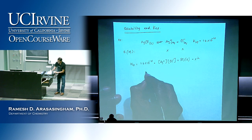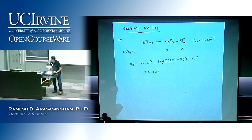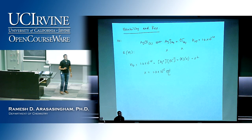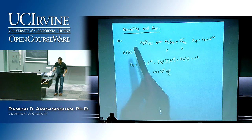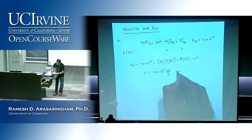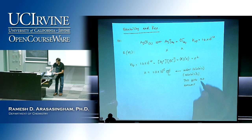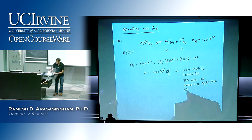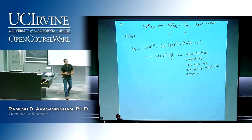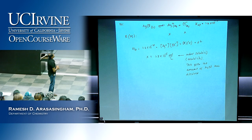Taking the square root, we get x = 1.3 × 10⁻⁵ moles per liter. This is the amount that dissolved — the molar solubility. Since it's in moles per liter, we call this molar solubility. This gives the concentration — or amount — of AgCl that dissolved.